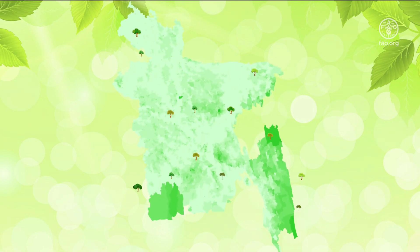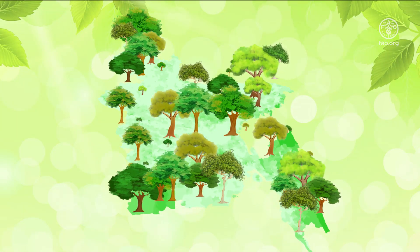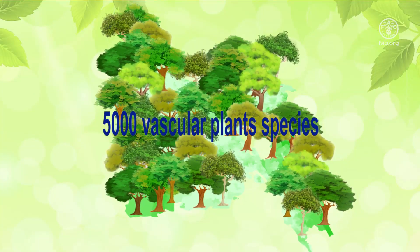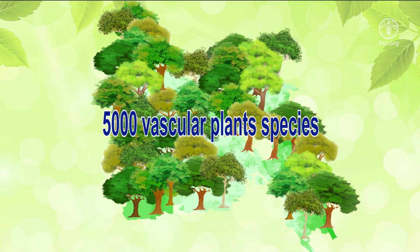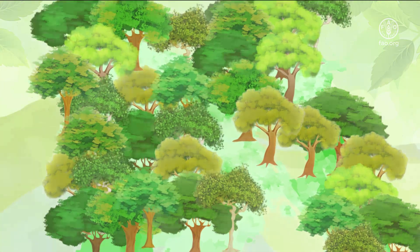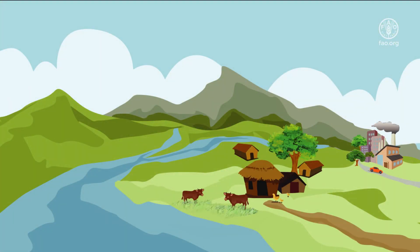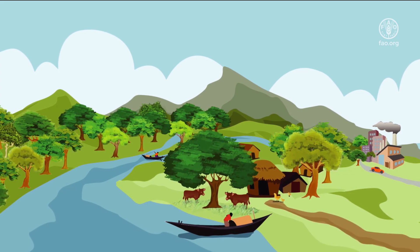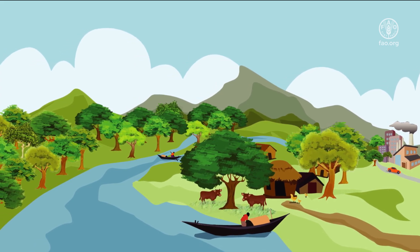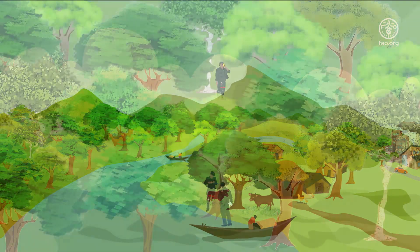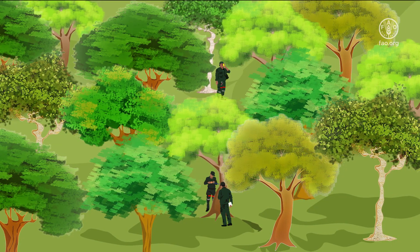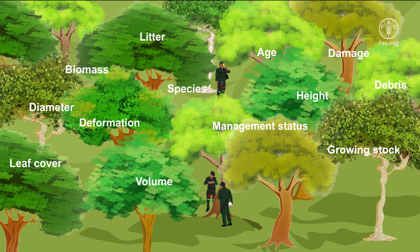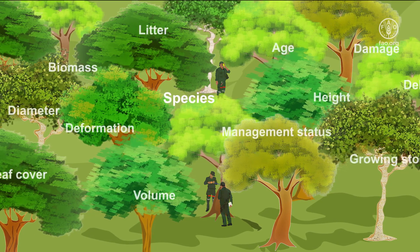Bangladesh is one of the richest biodiversity hotspots on Earth, with at least 5,000 vascular plant species. The role of species diversity is crucial to ensure ecosystems function well. Proper management and conservation of tree and forest resources cannot be undertaken without tree species identification.